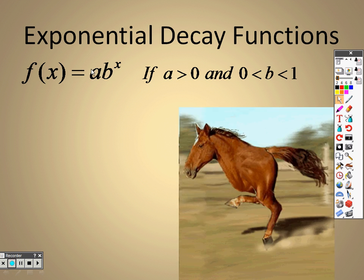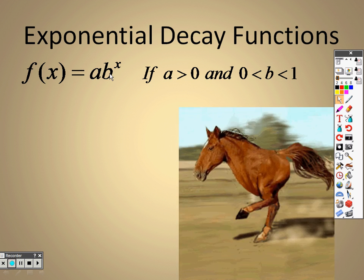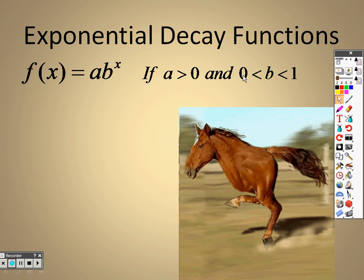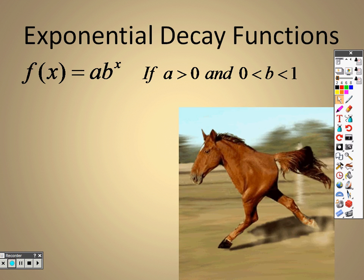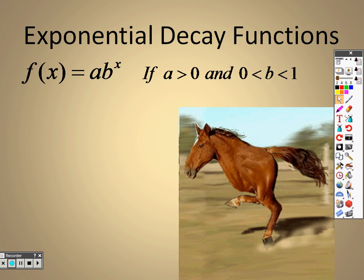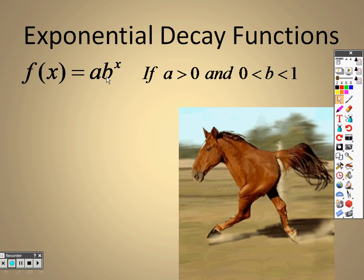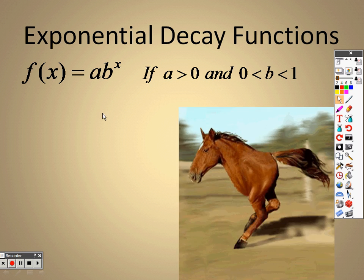a still needs to be greater than zero, but b is a fraction - it's between zero and one. The key when you are doing this is that it is a decay function, an exponential decay function, if b is a fraction. So if b is a fraction between zero and one, that's when you know you have an exponential decay function.